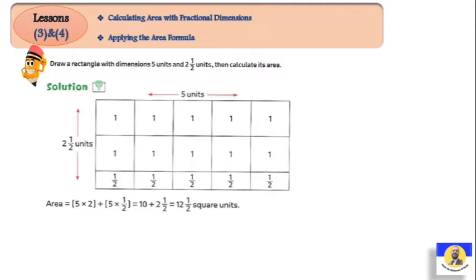Draw a rectangle with dimensions 5 units and two and a half units, then calculate its area. Five units, if I want to make a drawing, we can make a simple count, then we will have one, two, three, four, five. Then I will do rectangle, we can make two and a half, then we will have one, two, and the half.